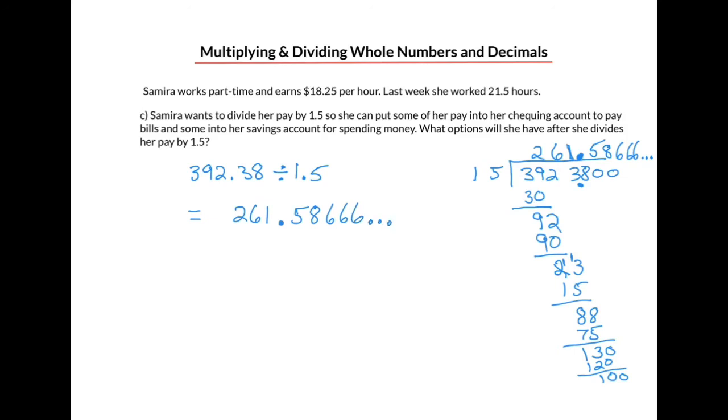Now because we're dealing with money, we want to round to the nearest cent. So in this case, the 8 will become a 9. So our answer is 261.59 or $261.59. So this becomes one of our options. We can place that amount in either the checking account or the savings account. But what about the other option?